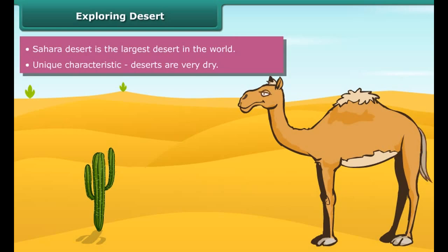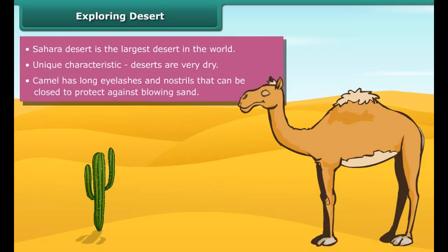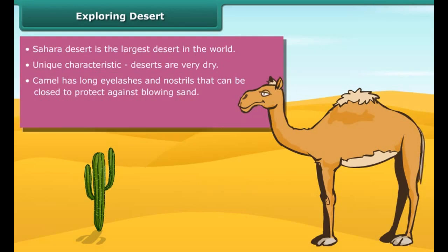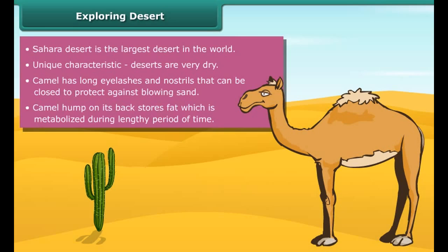Did you know that the Sahara Desert is the largest desert in the world? It is located in Africa. Deserts have a unique characteristic of being dry — they are hot and dry due to a high rate of evaporation and limited rainfall.